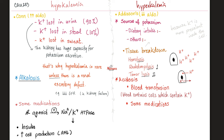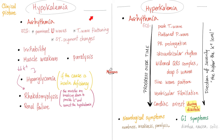Sodium problems equal CNS problems, but kalium problems equal cardiac problems. Whether you have hypokalemia or hyperkalemia, arrhythmia can happen and it shows up on the EKG. For hypokalemia, memorize prominent U waves on EKG. For hyperkalemia, memorize the peaked T wave. As hyperkalemia worsens, you go from peaked T wave to wide QRS, sine wave pattern, ventricular fibrillation, cardiac arrest — you can die. Hypokalemia can stop the heart during diastole; hyperkalemia can stop the heart during systole.